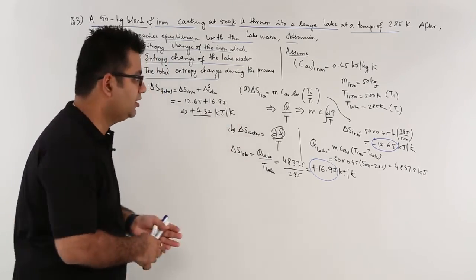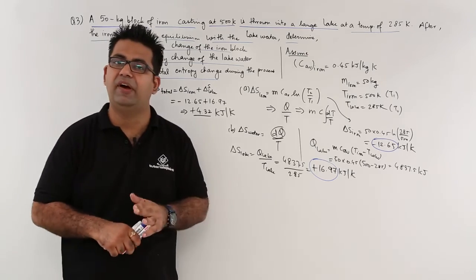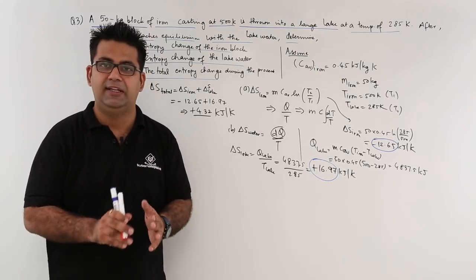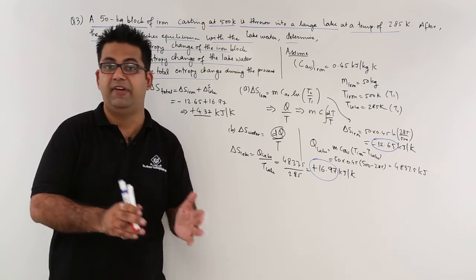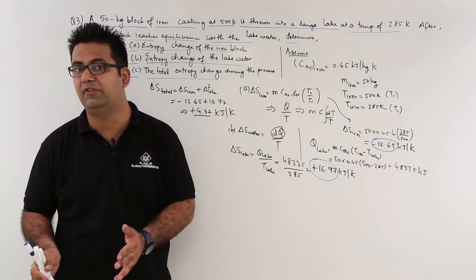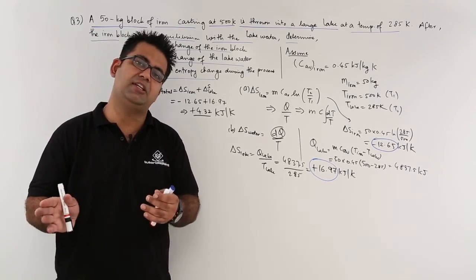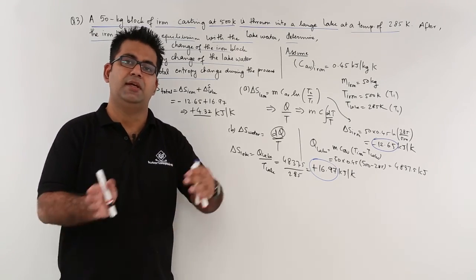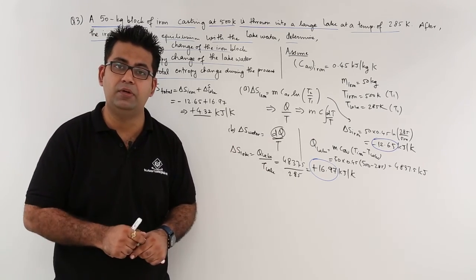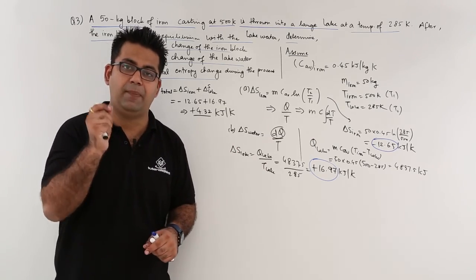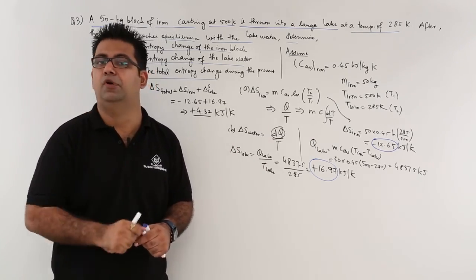Very simple to understand. I hope by now you have understood the entire section of the second law and the very important section of entropy. Now let's take this discussion a bit further and start discussing about availability and irreversibility in a process.